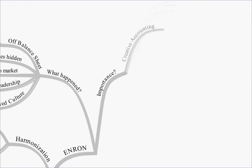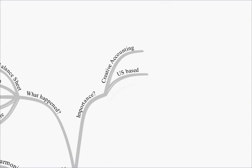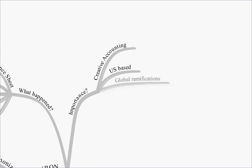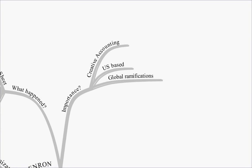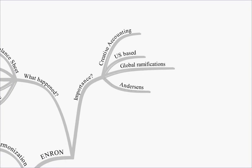Why was Enron important? First of all, creative accounting was being used, which has now been banned. It was US-based, and they thought they had sufficient regulations to prevent this sort of thing. It had global ramifications as it was a very large firm known throughout the world. And of course, the collapse of Andersen's was a very important event for the accountancy profession.